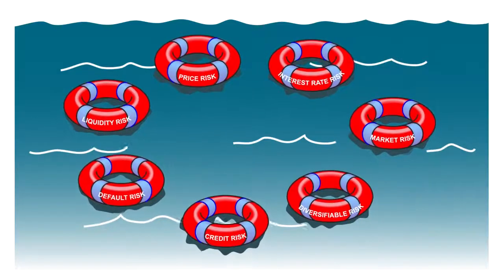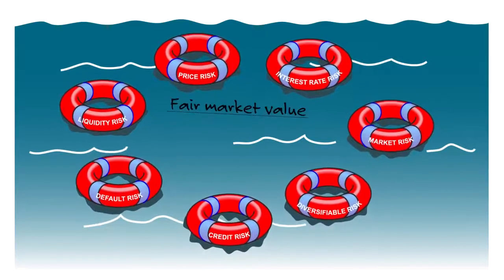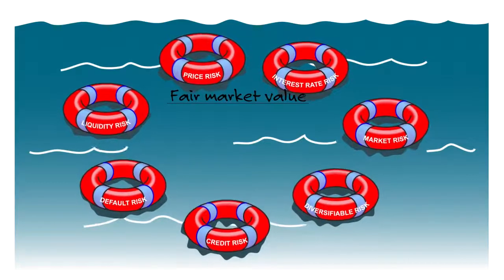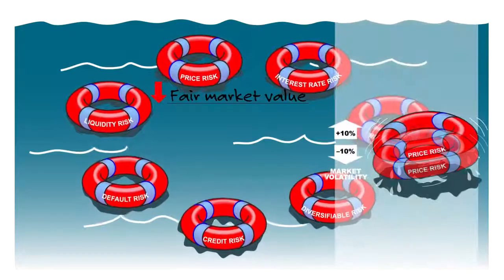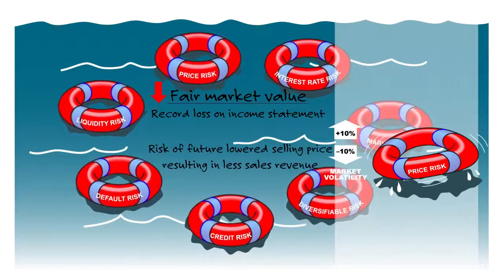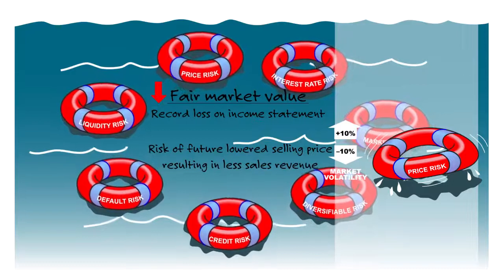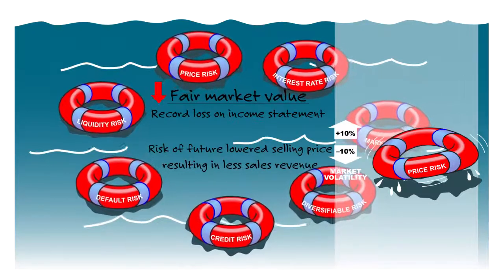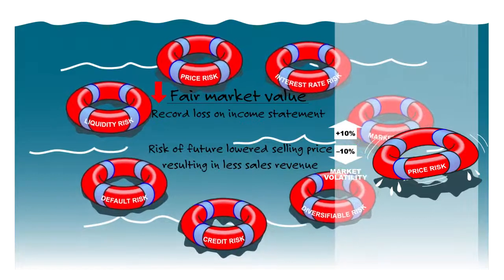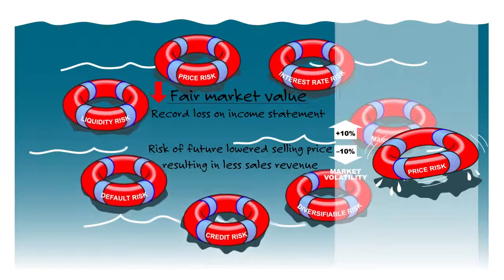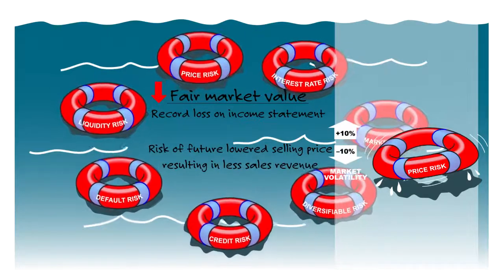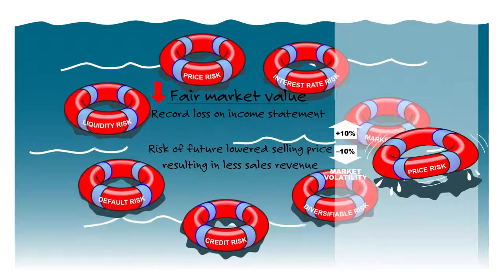Price risk can be looked at one of two ways. If we invest in a trading security or available-for-sale security being marked to fair market value, price risk is the risk that if the market value goes down, we're going to have to record a loss on our income statement. Or if you sell it, price risk is the risk that the selling price goes down in the future, and you'd have less sales revenue. There are ways to hedge price risk — if you own an asset and you're worried about the price going down, you might be able to sell forward or futures contracts, or buy a put option, so that if the price does go down, you can use the profit on the derivative to offset your lower selling price.